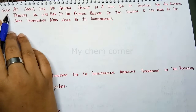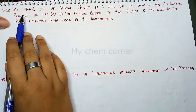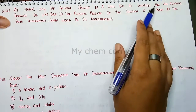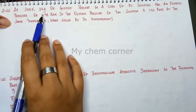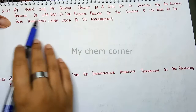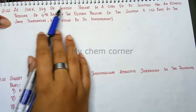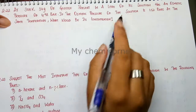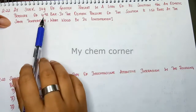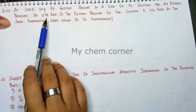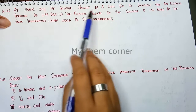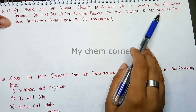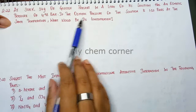Question 2.22: At 300 Kelvin, 36 grams of glucose present in a liter of its solution has an osmotic pressure of 4.98 bar. Temperature is given, weight of glucose is given. When this much glucose is dissolved in one liter of water, osmotic pressure of 4.98 bar is produced. If the osmotic pressure of the solution is 1.52 bar at the same temperature, what would be the concentration?